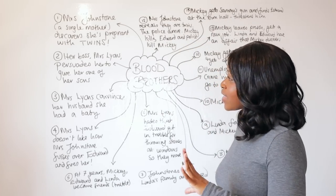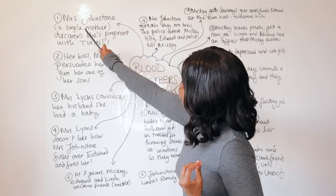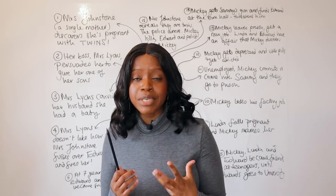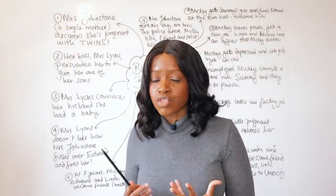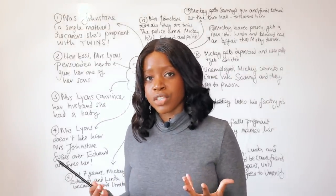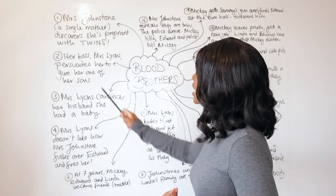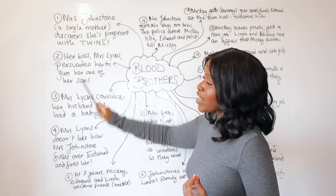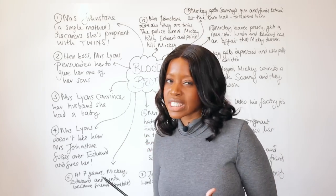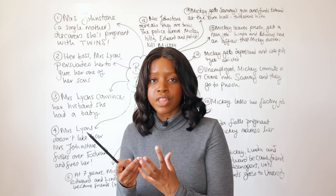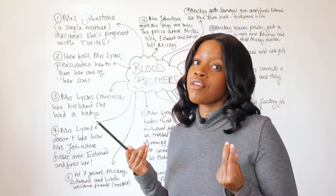The play begins when we learn about Mrs. Johnstone, a struggling single mother who already has lots of children and lots of mouths to feed. She's really struggling to look after and care for all her children. She discovers, to her shock, that she is pregnant with twins. She wonders what she's going to do — she's just a cleaner and literally can't afford the children she already has, let alone add more to her family.